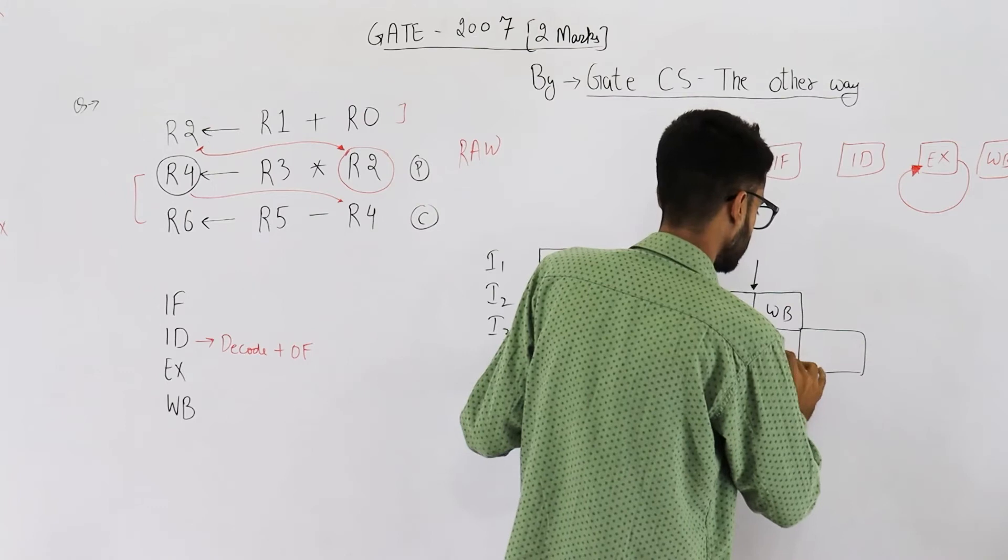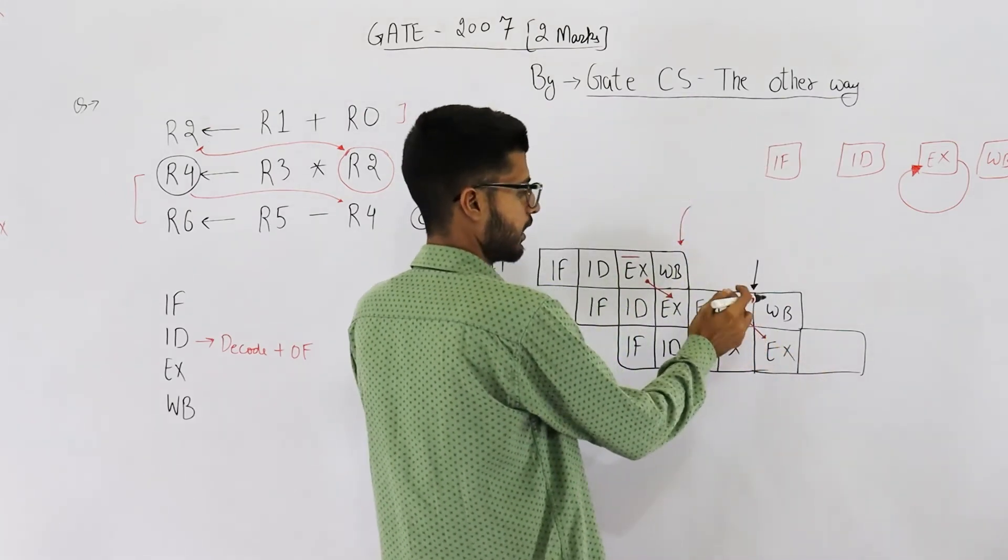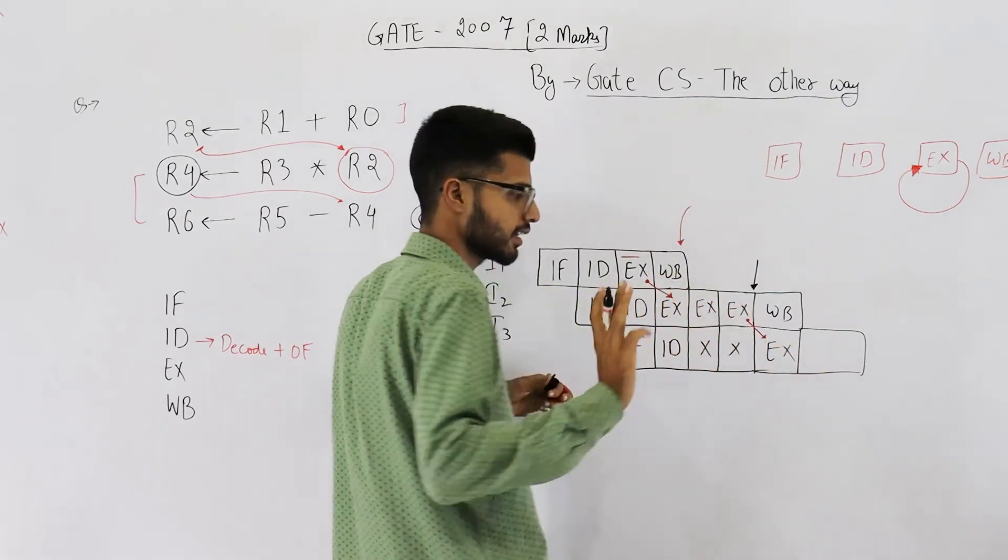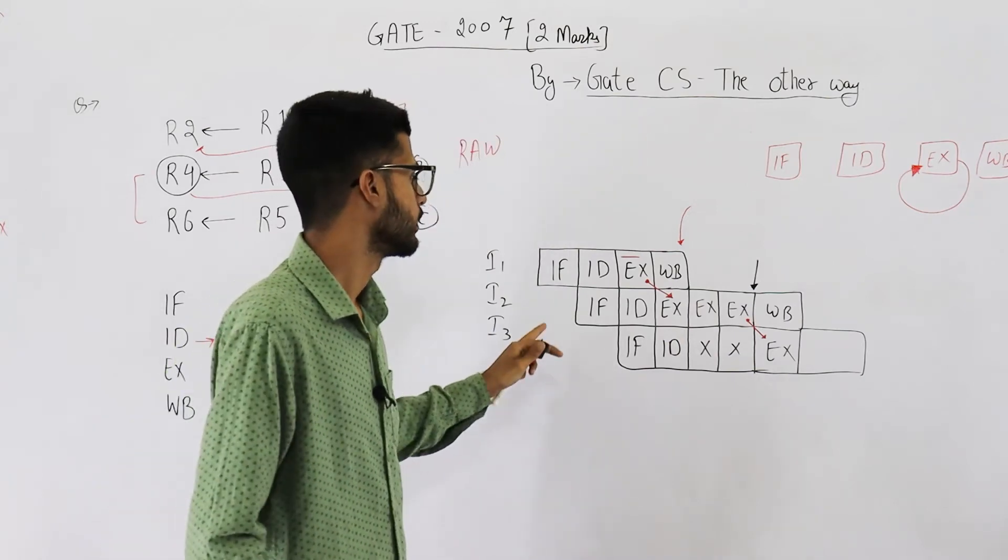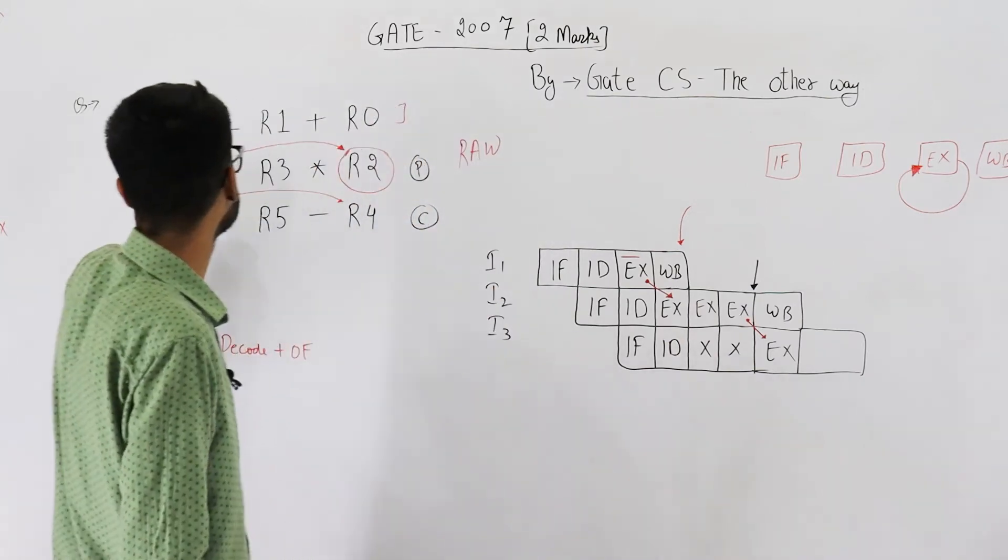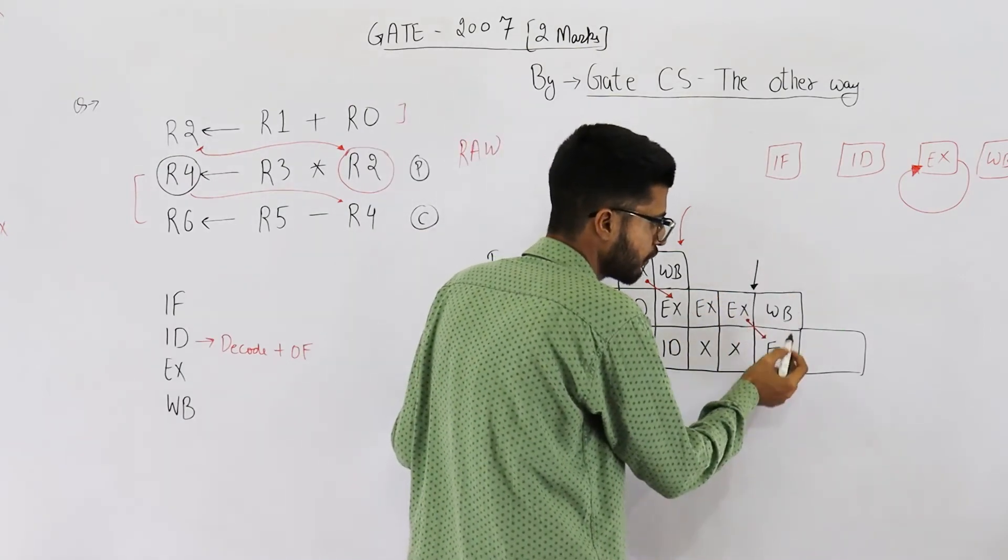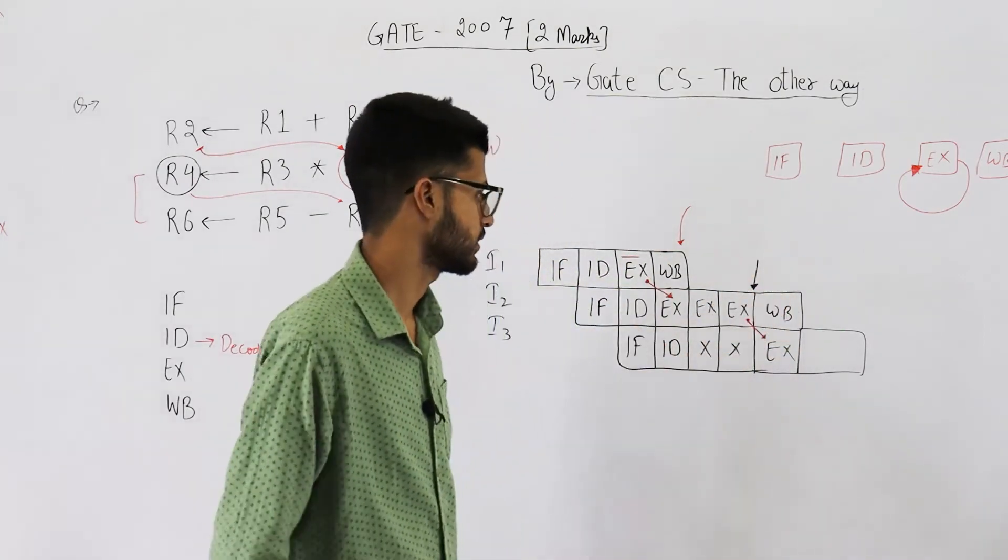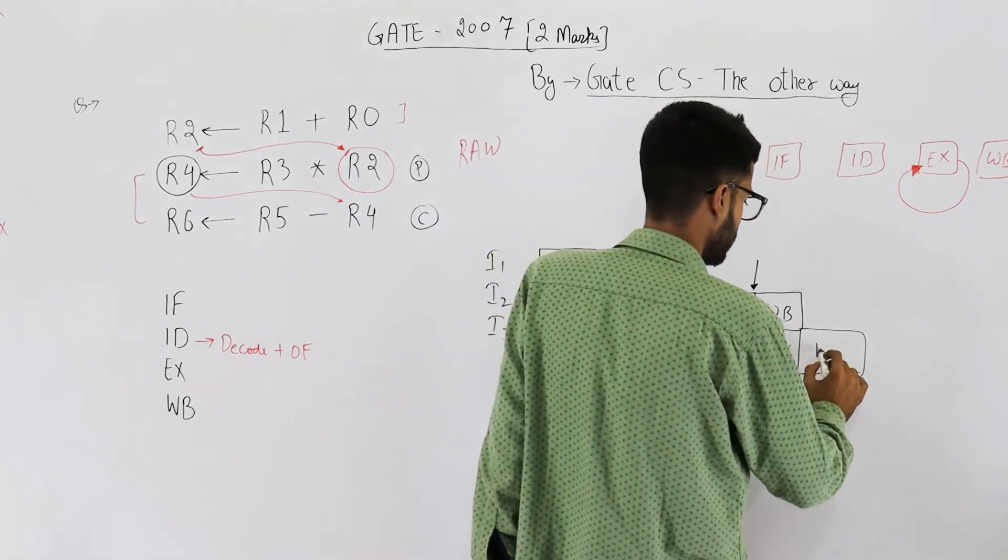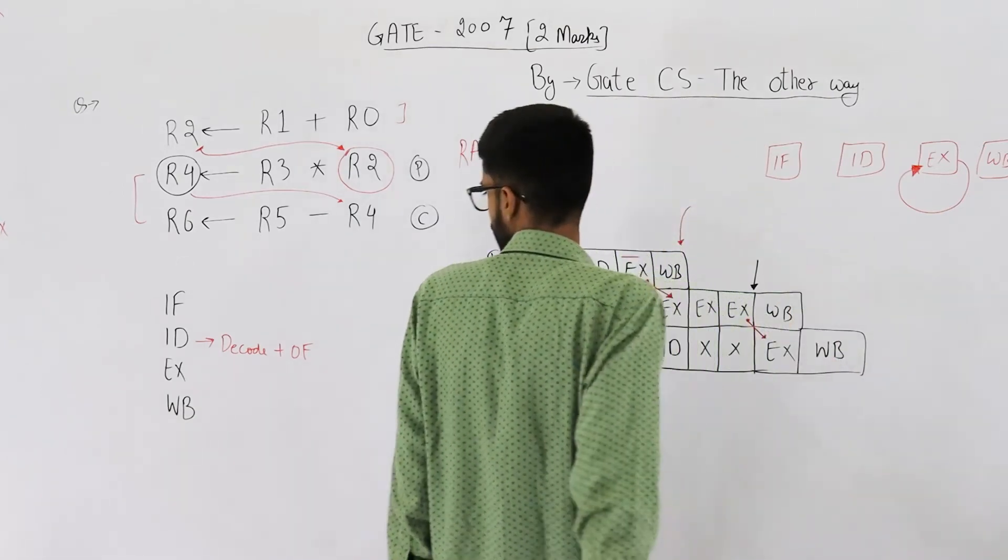So after completing the three cycles of execute stage, I2 has calculated this value R4, and at that very moment of time, here we forward it to the next instruction's execute. Then we are left with only write back stage. So this is the entire diagram.